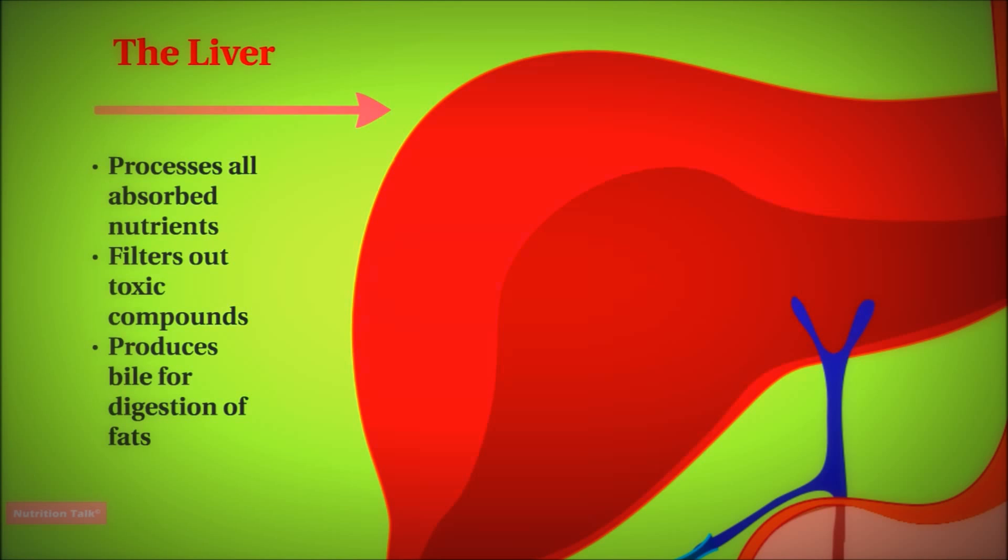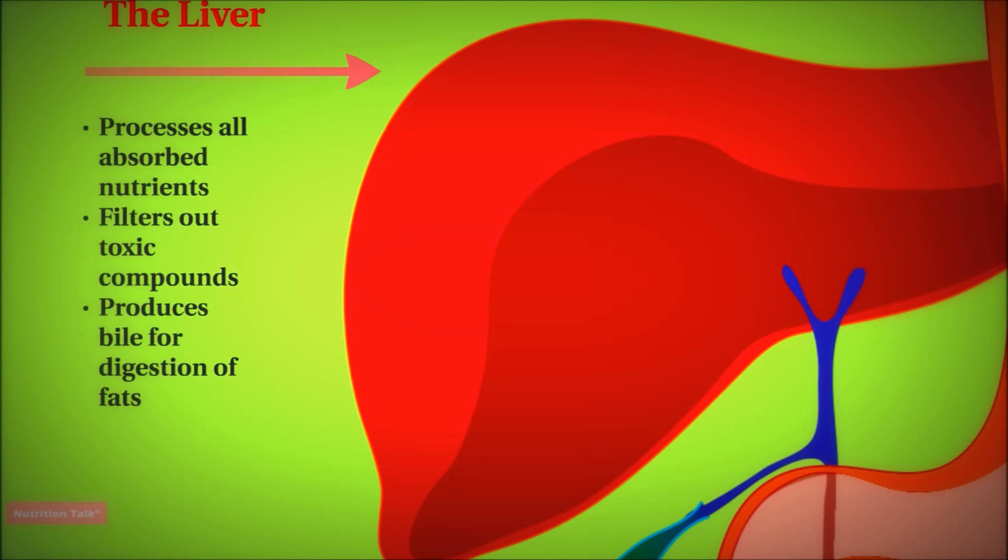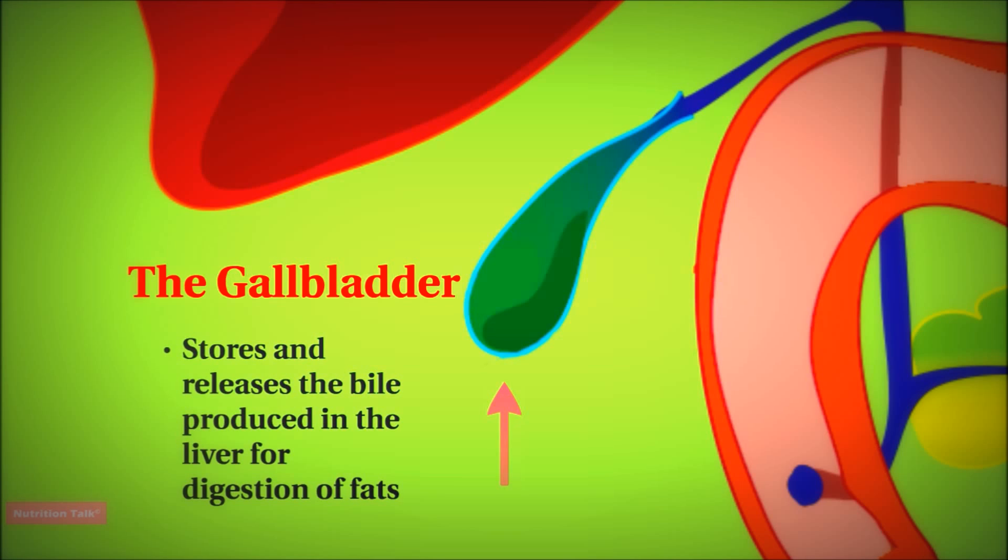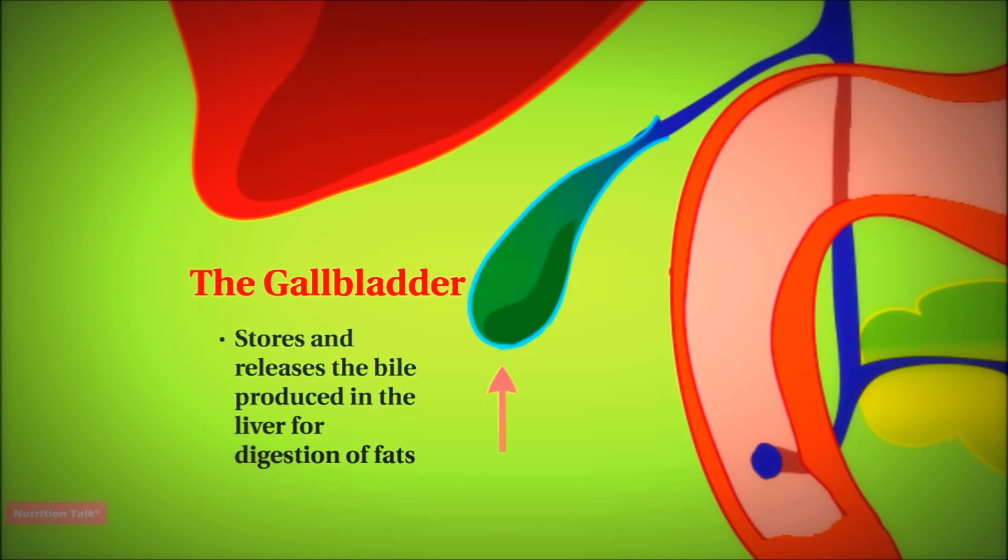So once the liver manufactures this bile, it then becomes stored in the gallbladder. The gallbladder stores this bile until the food starts to enter the digestive system and reaches the small intestine, at which point the gallbladder will become stimulated to release its bile, which will help the digestion of fats. Now once in a while, these bile salts may crystallize in the gallbladder, forming gallstones, which can become a serious problem.